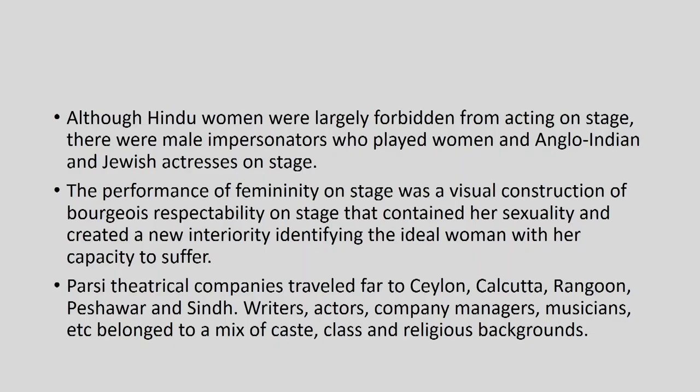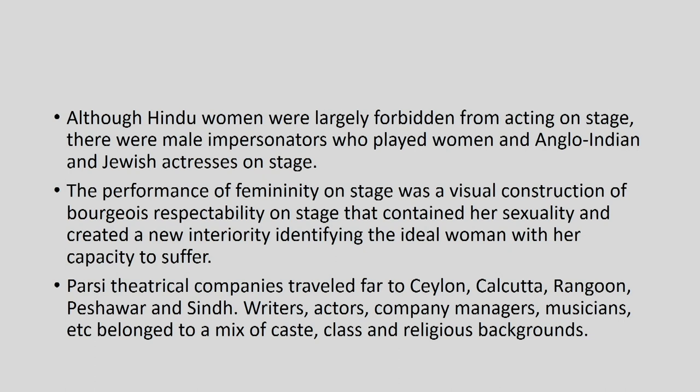The performance of femininity on stage was a visual construction of bourgeois respectability that contained her sexuality and created a new interiority identifying the ideal woman with her capacity to suffer — observations made by Katherine Hansen on female impersonation on the Parsi stage. Parsi theatrical companies travelled far to Ceylon, Calcutta, Rangoon, Peshawar, and Sindh. Writers, actors, company managers, and musicians belonged to a mix of class, caste, and religious backgrounds. Much of the anecdotal evidence of female impersonation is drawn from Katherine Hansen's translation of Somnath Gupta's scholarly Hindi monograph on Parsi theatre, based on theatre notices and autobiographical pieces of female impersonators like Narayan Prasad Betab and Fida Hussain.